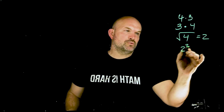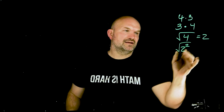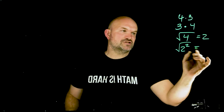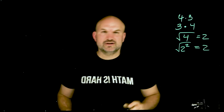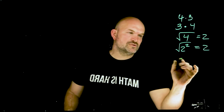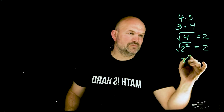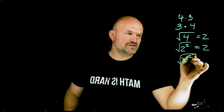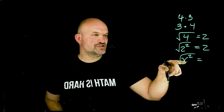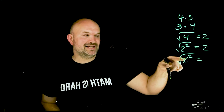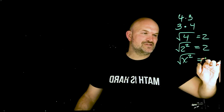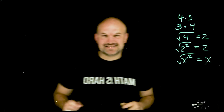So 2 squared is equal to 4, meaning the square root of something squared is just going to equal that value. That's important for numbers, but also for variables. If I have the square root of x squared, we recognize that is just going to be whatever thing is being raised to the second power — so in this example, it's going to be x.